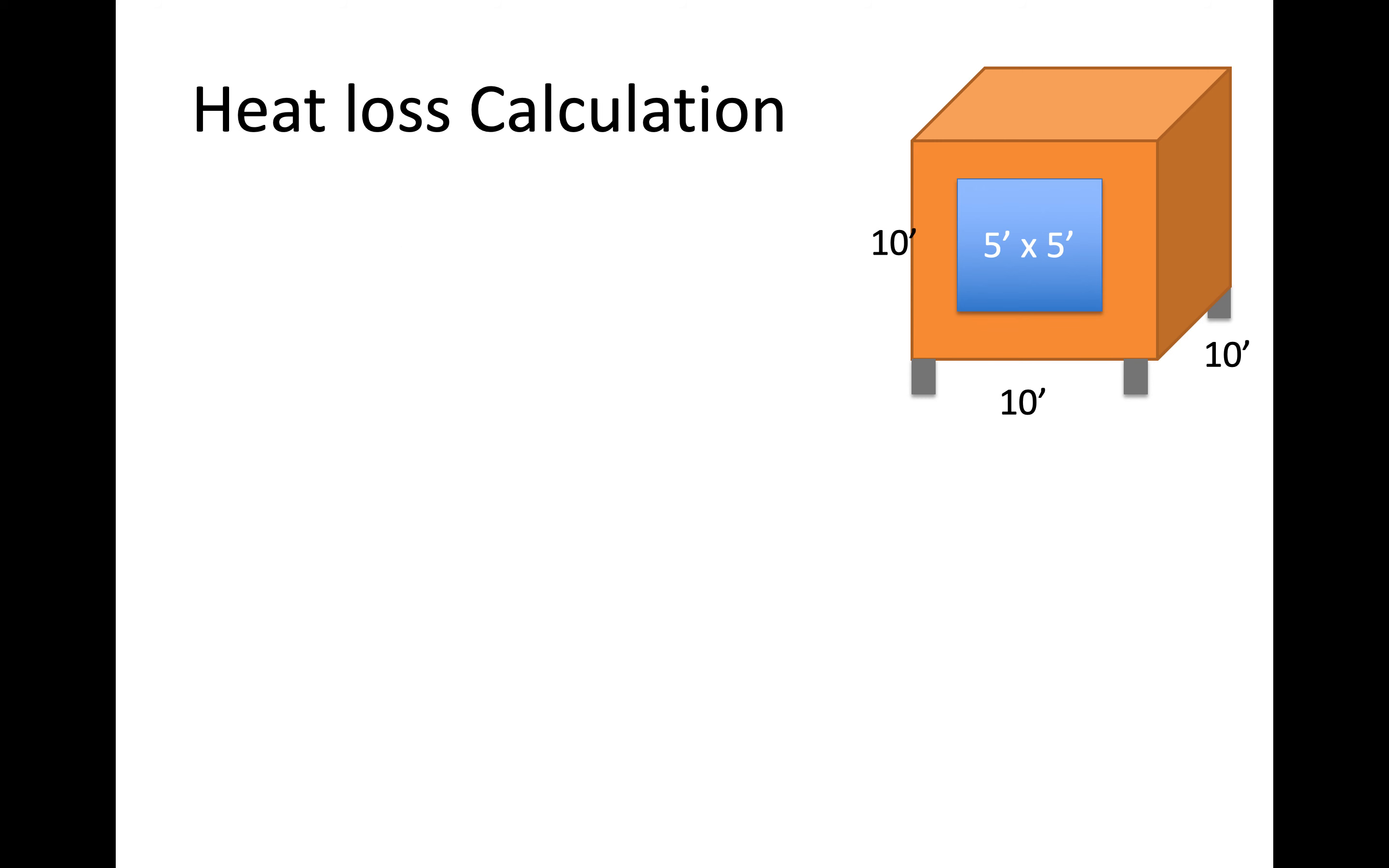So the first thing we need to do of course is calculate the areas of the two different kinds of surfaces. So the total area, it's a cube, and I made it easy, so the total area is a 10 by 10 piece and there are six sides and then the window area there's just the one window and it's a five by five window.